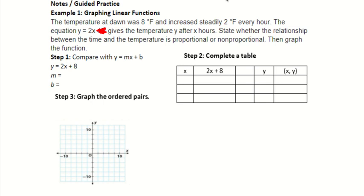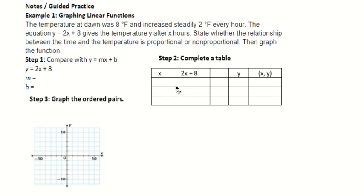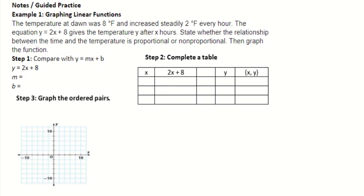That automatically tells us that it's not proportional. If this wasn't there, if it looked like this, just y equals 2x, now it's proportional. But because we have the plus 8, it's not proportional. But the big thing is what I want you guys to be doing is I really want us to be practicing making an xy table, plotting our points and then graphing it. We know that the slope is 2, the y-intercept is 8.